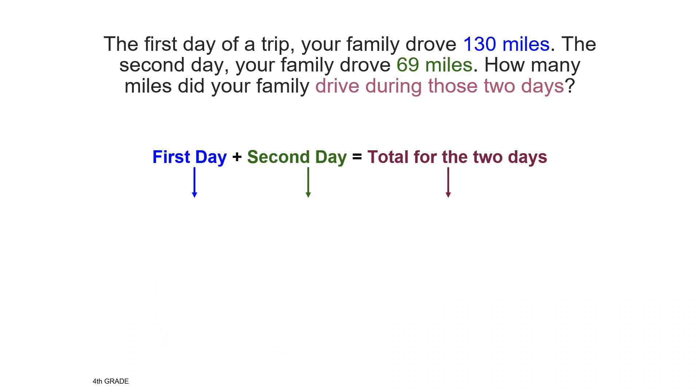Since I need to find the total miles driven, I am going to join the first and the second day to get the total for the two days. 130 is a number that I can work with in my head pretty easily. 69 is not as easy to think about, but 69 is close to 70. 130 plus 70 miles gives me a total of 200. The family drove about 200 miles. My answer should be very close to 200. Take a few minutes and use your paper now to find the exact answer.